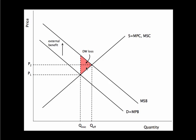In this case, we're producing too little compared to the efficient outcome; before we had too much of it. But either way, there's either lost surplus or wasted resources in the case of producing too much. So either way, it's inefficient — we've created deadweight loss.